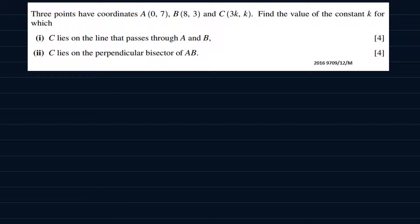Now it goes. Three points have coordinates A(0, 7), B(8, 3), and C(3k, k). Find the value of the constant k for which: part 1, C lies on the line that passes through A and B. Then on part 2, C lies on the perpendicular bisector of AB.